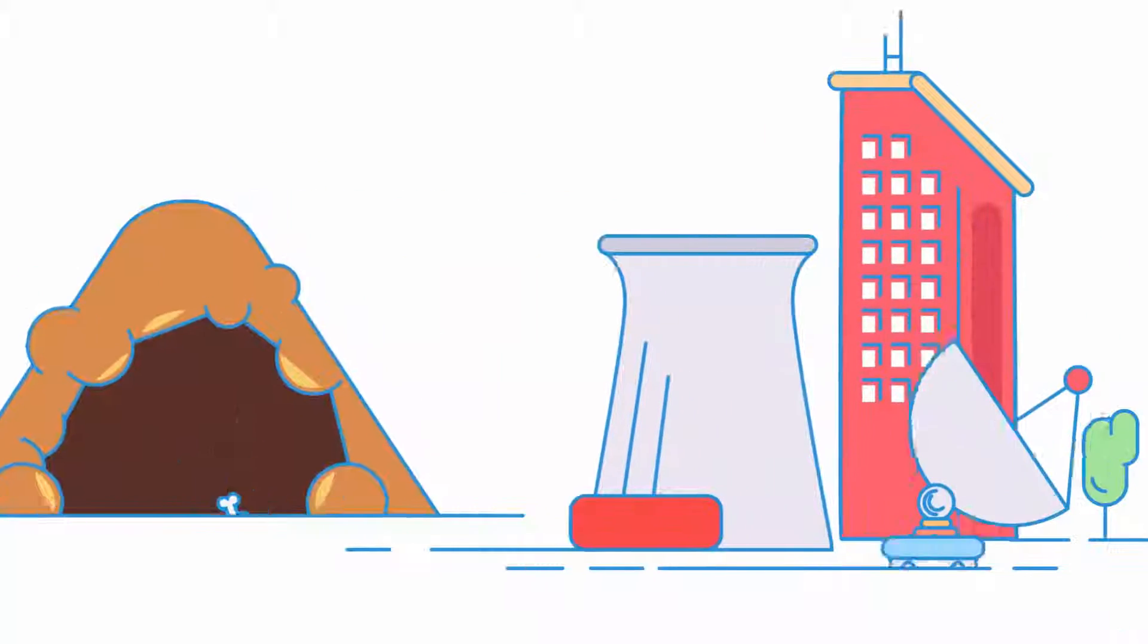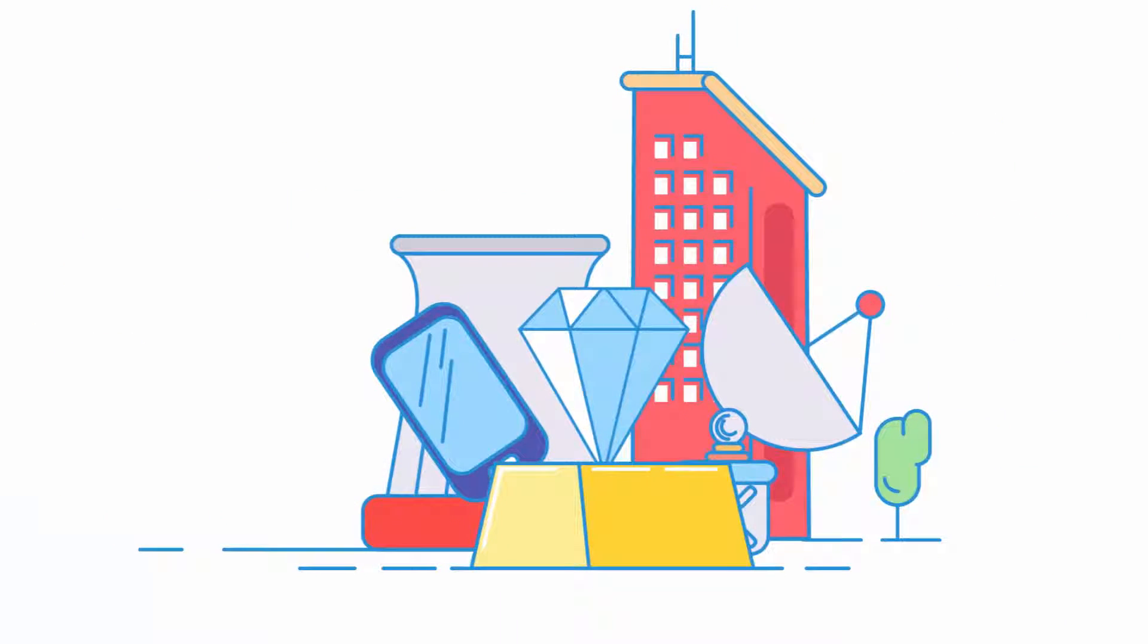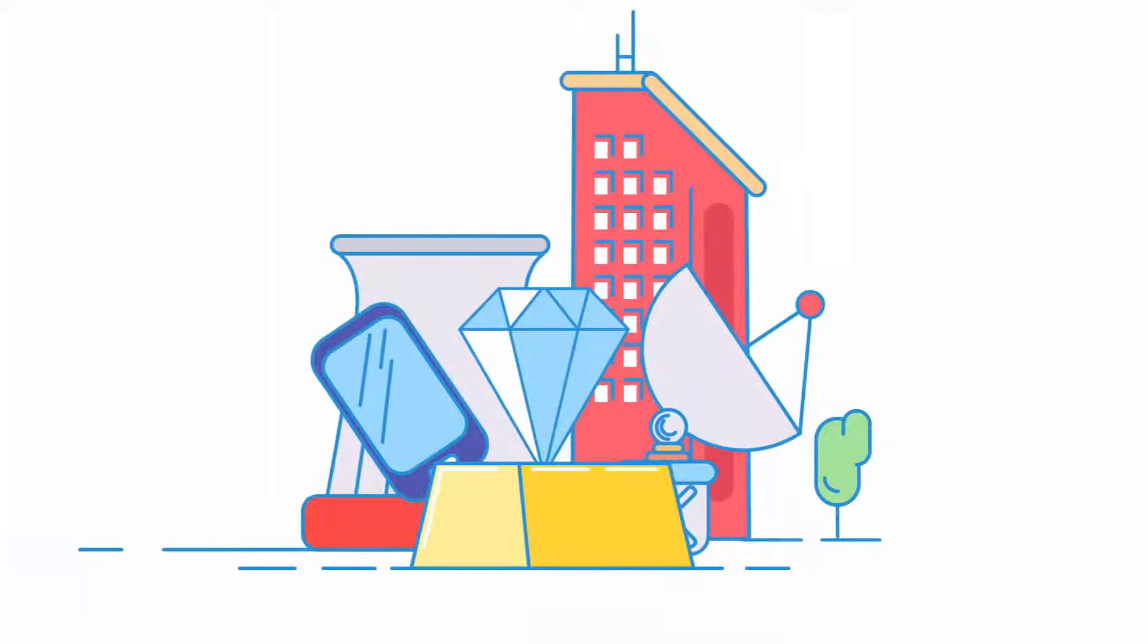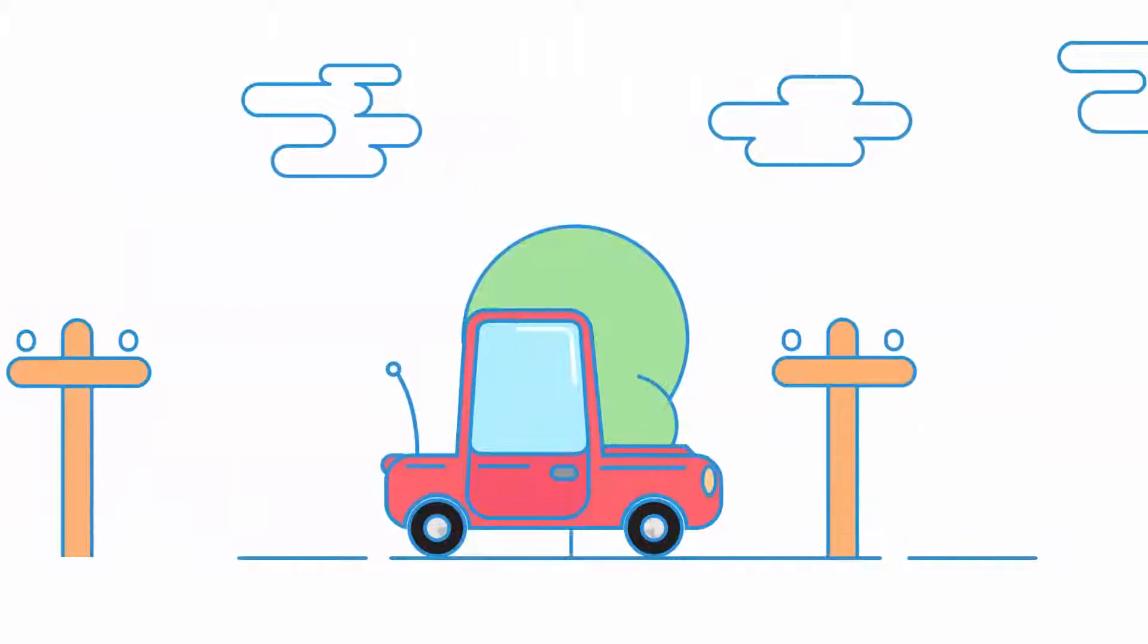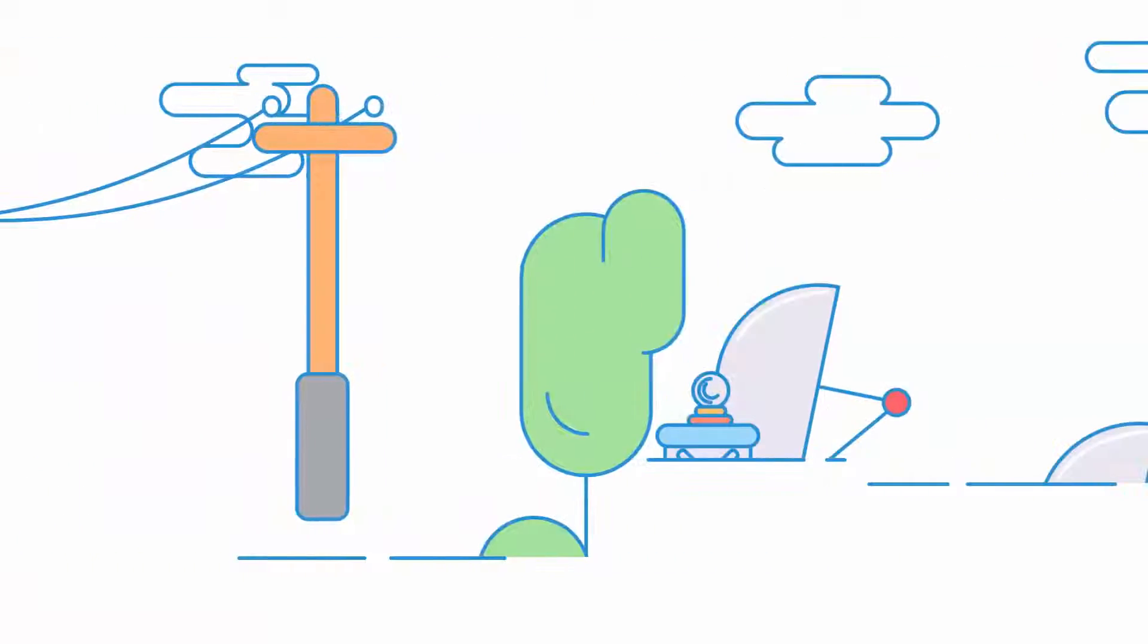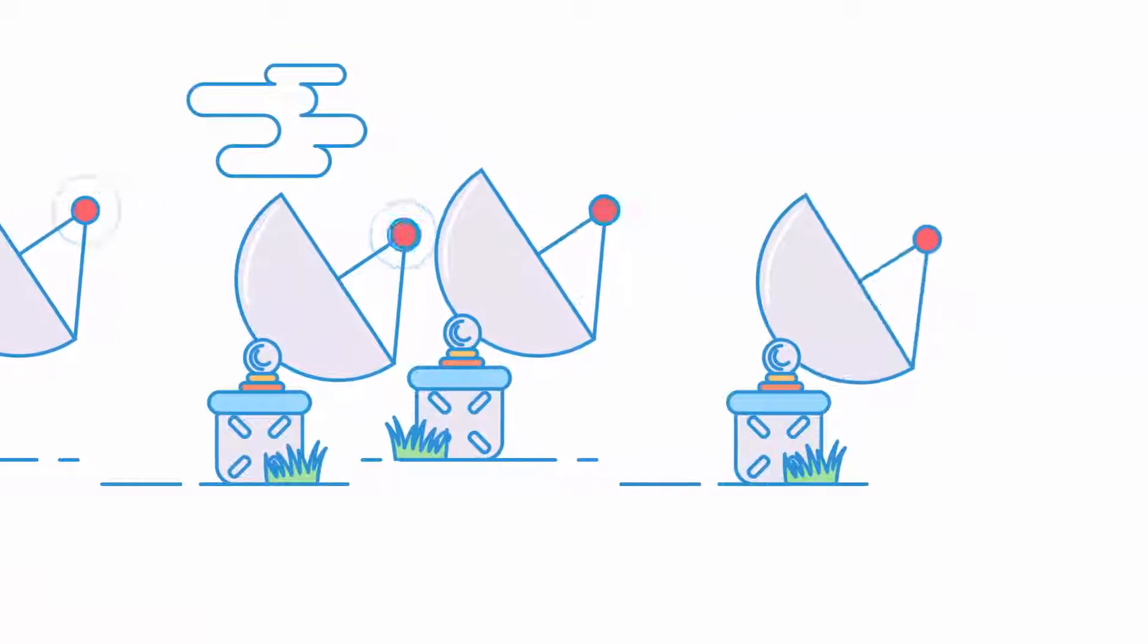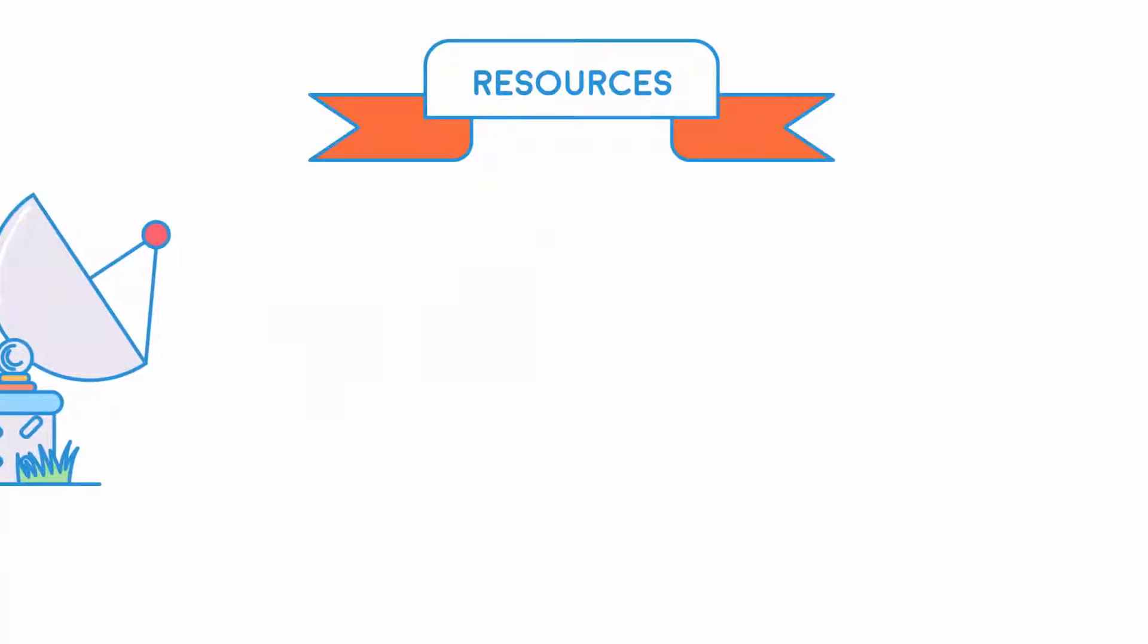But as the human race has developed, we now have a need for other more luxury items—maybe a bicycle or car to get us from A to B, electricity, even the internet. All these things require resources, lots of resources such as fossil fuels and metals.